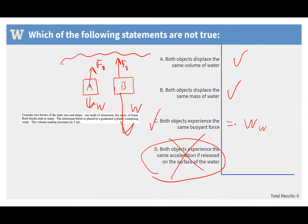If an aluminum block and a brass block are the same size and shape, they have the same volume and therefore displace the same amount of fluid. Since they displace the same mass of water, they experience the same buoyant force. However, they have different densities and thus different weights. So while the buoyant force is identical, the net downward force differs, meaning they accelerate at different rates — but both sinking, both displacing the same water, both having equal buoyant forces.